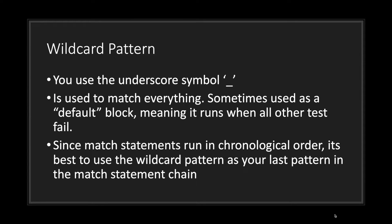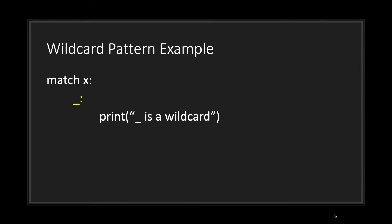We've talked briefly about the underscore symbol being the default, but in reality the underscore symbol is a wildcard pattern. A wildcard pattern is used to match everything. Sometimes this pattern is used as a default block — meaning it runs when all other tests fail. However, since match statements run in chronological order, it's best to use the wildcard pattern as your last pattern in the chain. It's just an underscore and it will match anything and everything.